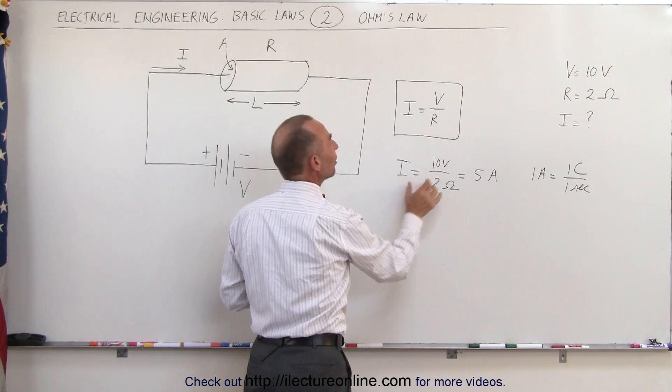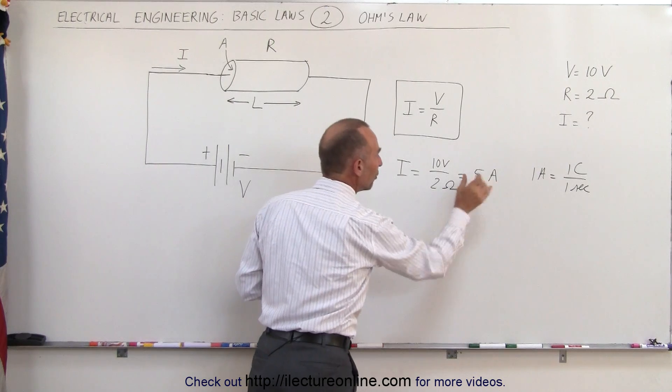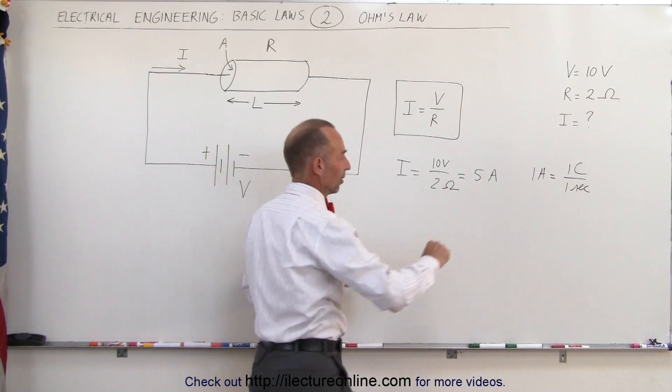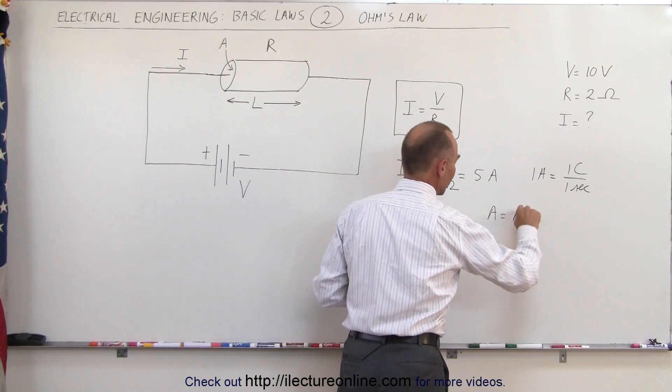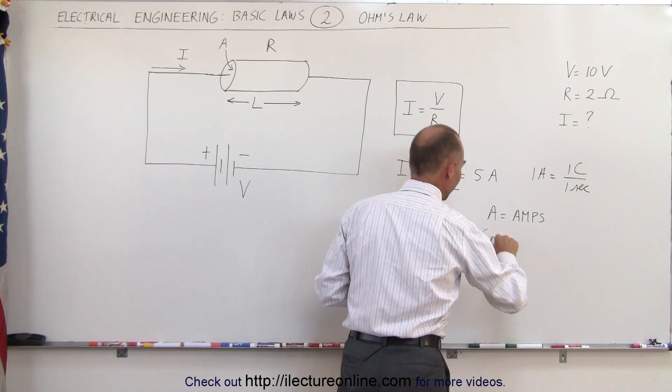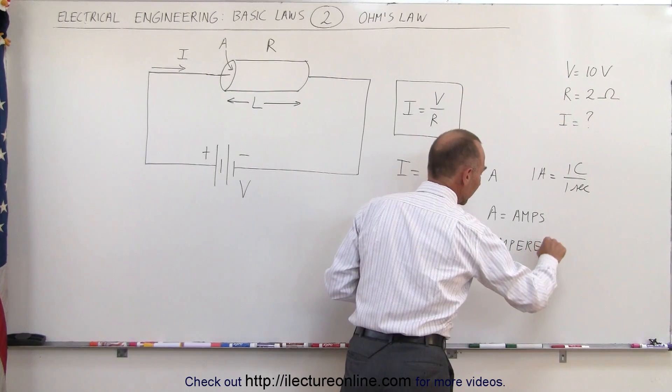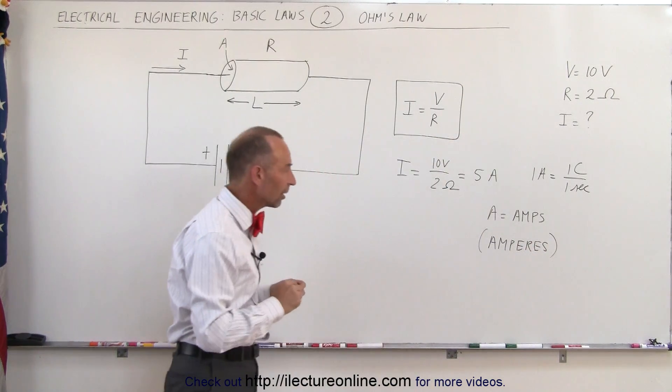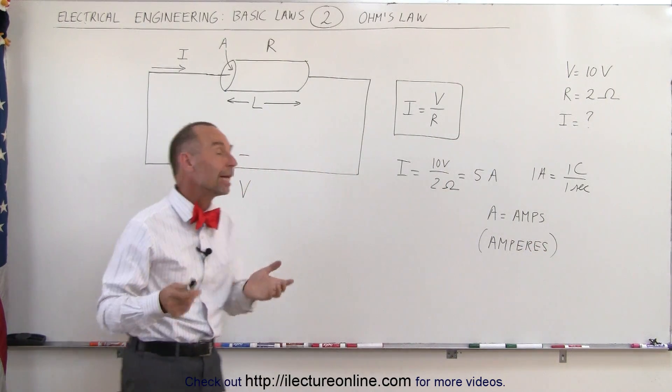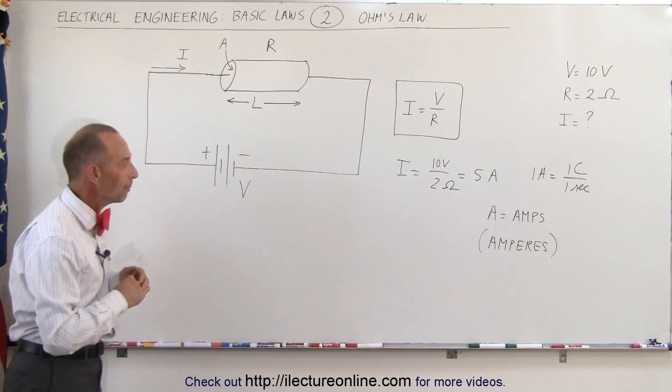Again, current is equal to volts divided by resistance, and the unit for that is amps. A equals amps. That term comes from the very famous physicist called Ampere, who came up with the concept of current flow, and therefore we named current flow after Ampere.